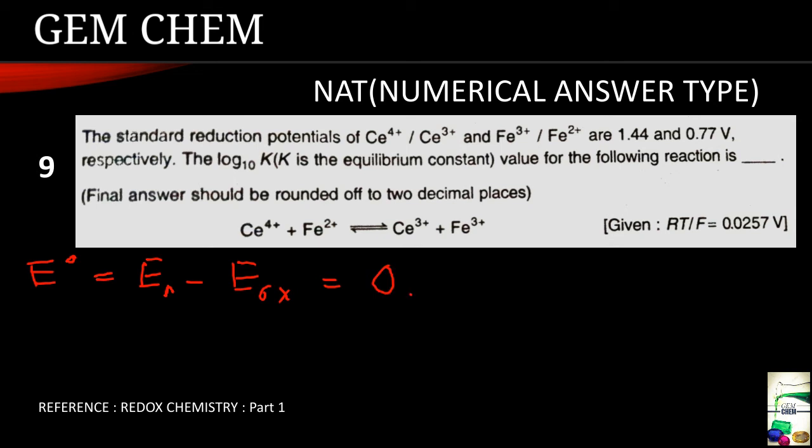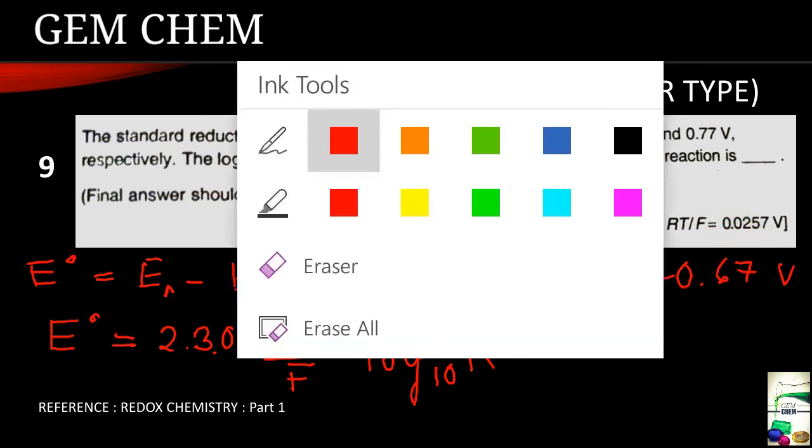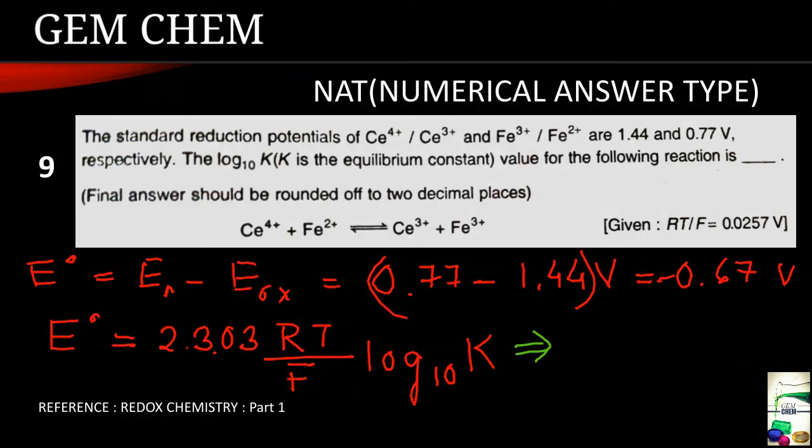So according to the equation our E0 should be ER, that is E reduction minus E oxidation, so it is 0.77 minus 1.44 volt and it comes to be as minus 0.67 volt. Now we will use the formula that is E0 is equals to 2.303 RT by F. Here since 1 electron transfer so we are considering N to be as 1, log 10 K. Now here we substitute the value that is 0.0257 and E0 value from here and ultimately the answer which we obtain is 11.32. This is the answer which we obtain for the log K value.